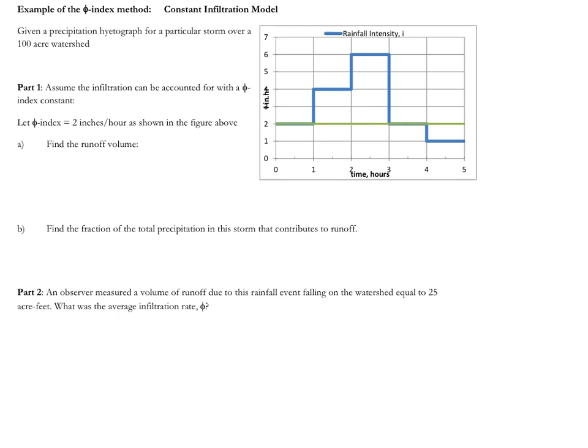So part two says an observer measured a volume of runoff to this same rainfall event on the watershed equal to 25 acre feet, and so we want to use this to find the average infiltration rate φ. So what we know about this watershed is that 125 acre feet of rain fell.